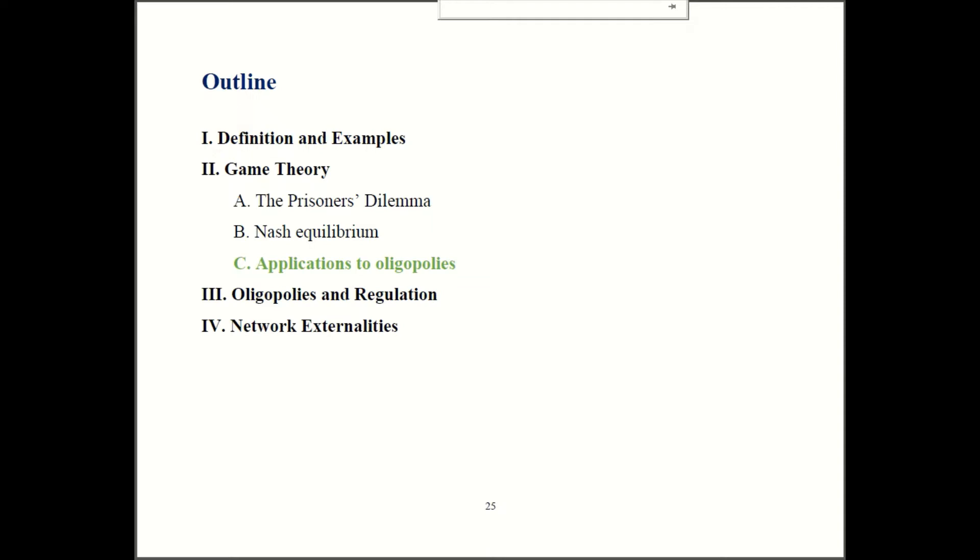We had a couple of examples in the first episode in this chapter where we realized that what our firm should do will depend upon what we think other firms will do. We couldn't quite get a clear answer because we didn't know what action the other firms are going to pick. Now we're going to use our game theory tools to solve those problems.